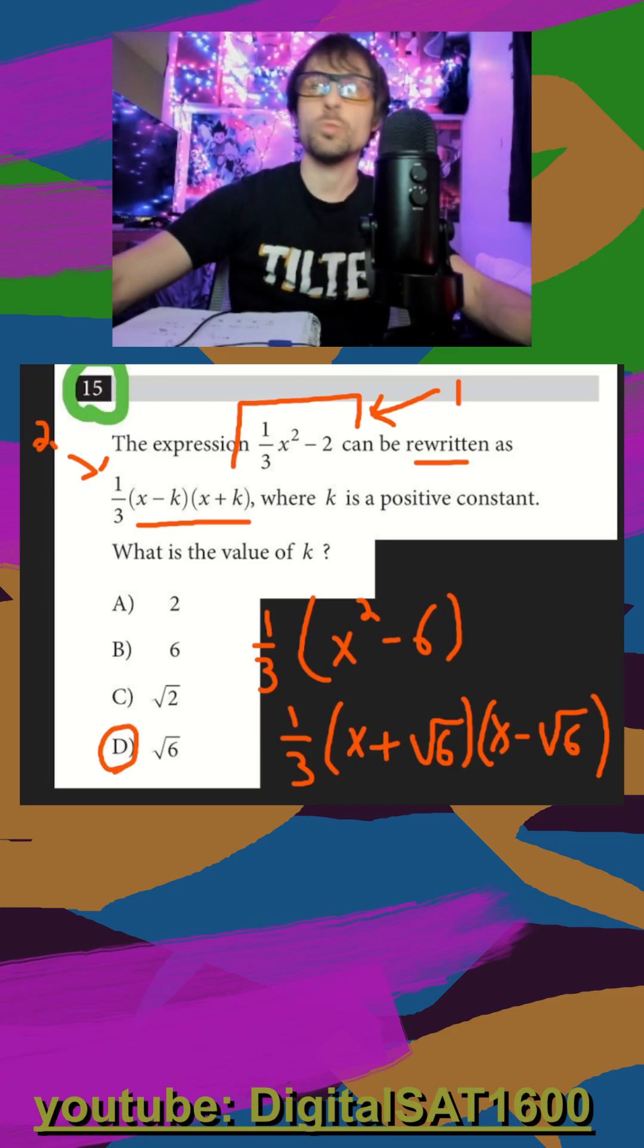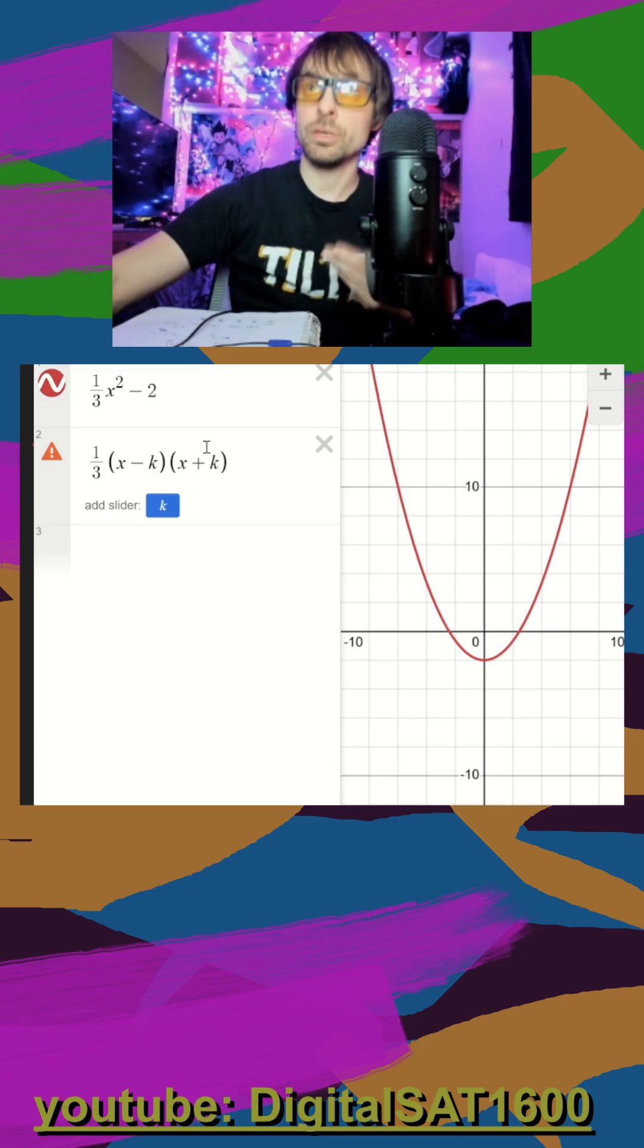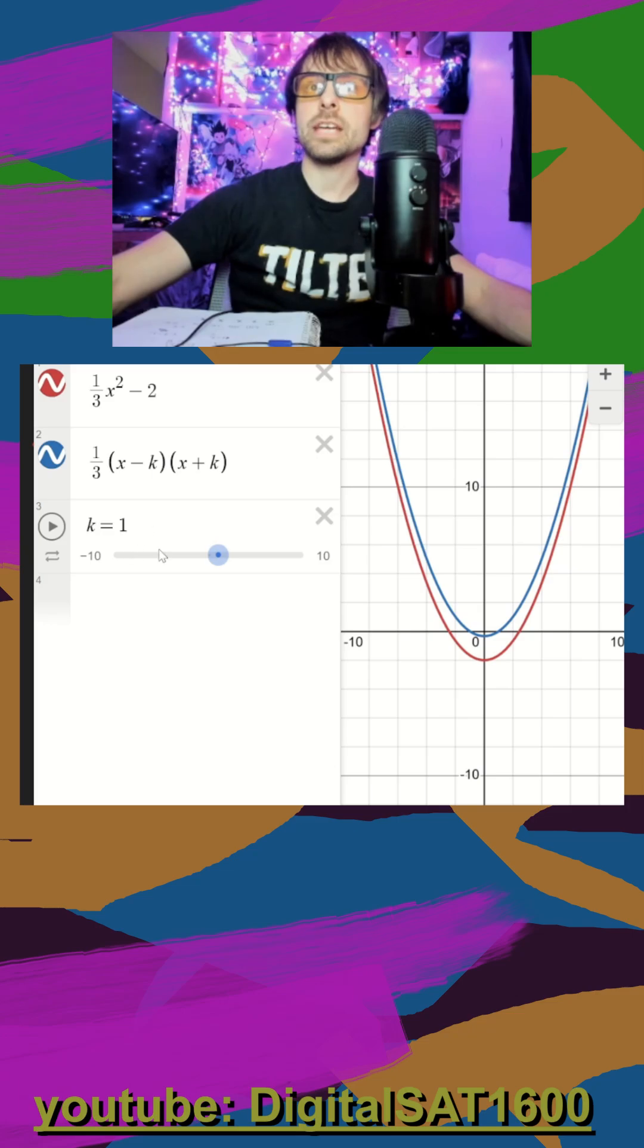But if you just feel like doing it on Desmos, we'll pull this up. I put both of my equations in, and they said that these should be able to be rewritten as which means they're equal. So I type equation one, equation two, add my slider for k,